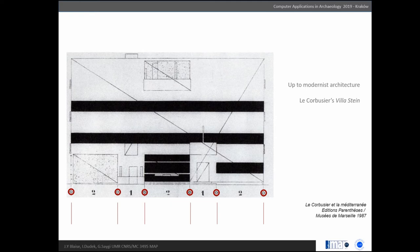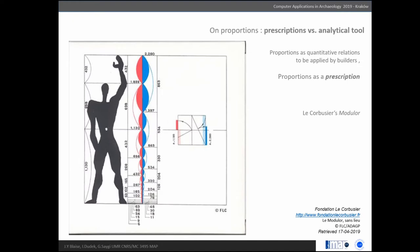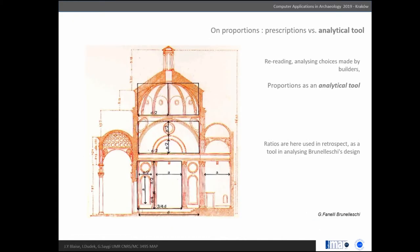But more important in this experiment, proportion can be seen as a prescription—something that as a designer you should know to dimension your edifice. This is why Le Corbusier invented this system of proportion, the Modulor. He says, if you want to build something, use this. This is one way to use proportions.